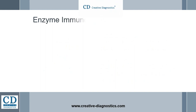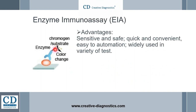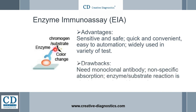Enzyme immunoassay (EIA) is possibly one of the most popularly used immunoassays. Instead of radioactive isotopes, EIA uses enzymes, for example HRP and AP, as probes. These enzymes allow detection often because they produce an observable color change in the presence of certain reagents of substrate and chromogen, for example DAB and TMB, based on the enzymatic reactions.